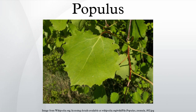Populus section Aigeiros: Black Poplars, some of the cottonwoods. North America, Europe, Western Asia, temperate. Includes Populus deltoides (Eastern Cottonwood), Populus fremontii (Fremont Cottonwood), Populus nigra (Black Poplar, placed here by nuclear DNA; cpDNA places it elsewhere). Also Populus canadensis (Hybrid Black Poplar) and Populus inopina (Hybrid Black Poplar).